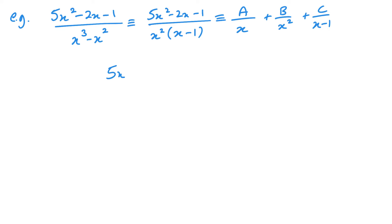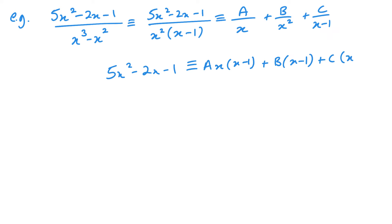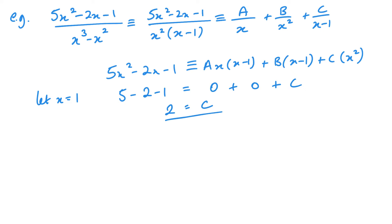After that it's quite straightforward. If you remember the shortcuts from previously, this would have been a multiplied by x and x minus 1. If you're going to take shortcuts, just be careful — remember each term is technically over the full denominator. Now I want to start off with let x equal 1. That gives me 5 minus 2 minus 1, and because of the brackets I get 0 plus 0 plus 1c. So 5 minus 2 is 3, minus 1 is 2, therefore c equals 2.